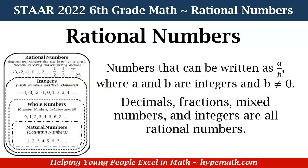So let's review rational numbers. Rational numbers are numbers that can be written as A over B — or we can say a fraction — where A and B are integers and B does not equal zero. We have decimals, fractions, mixed numbers, and integers, which are all rational numbers.